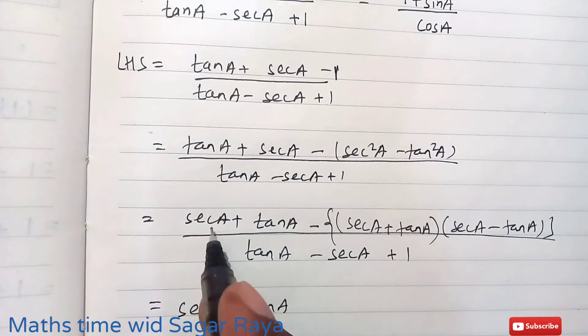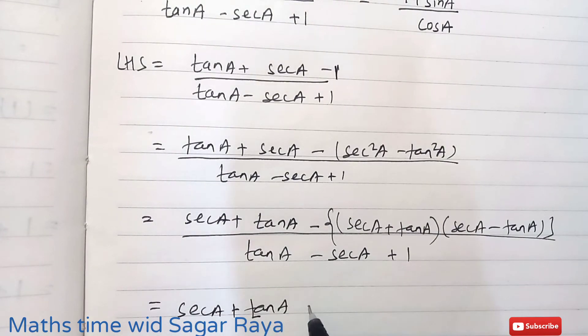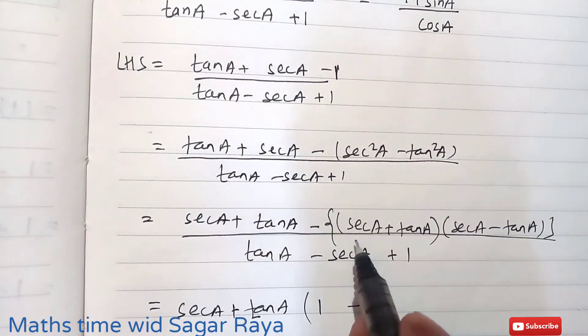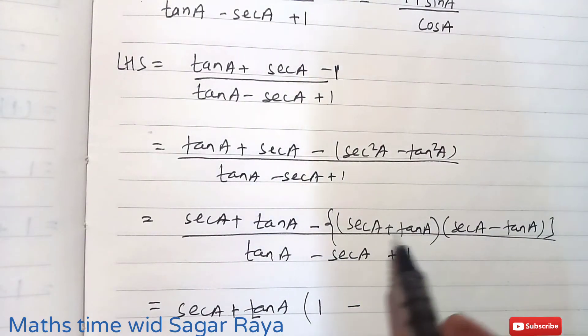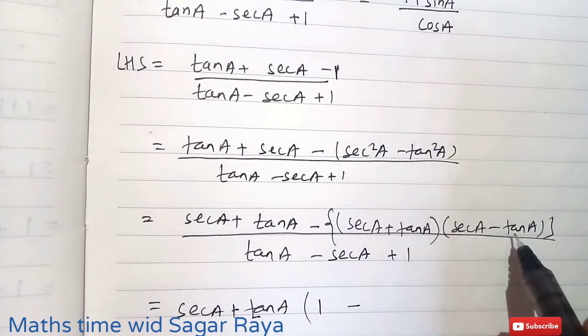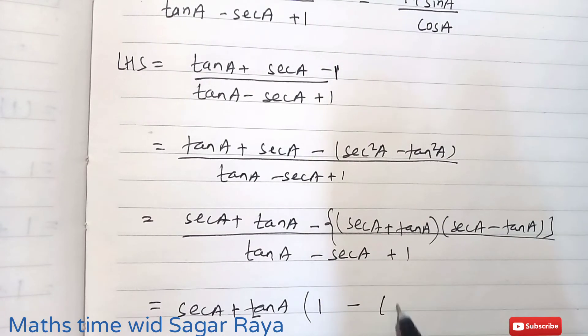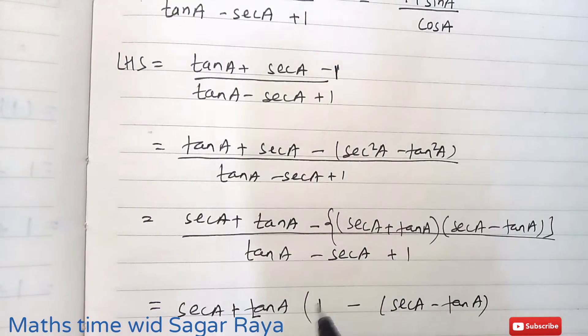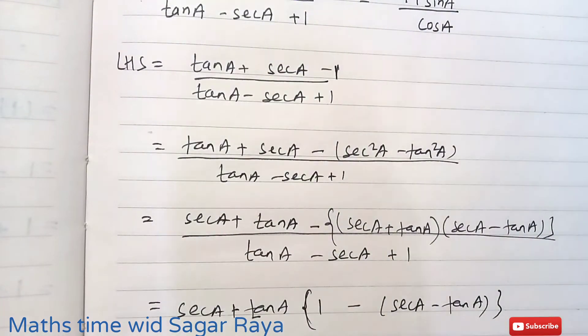If you take secA + tanA common, then what remains here? Instead of secA + tanA, here remains only 1. And instead of secA + tanA, if you take common, here remains secA - tanA. You can change this into curly brackets.